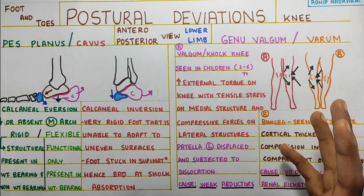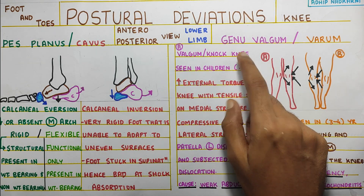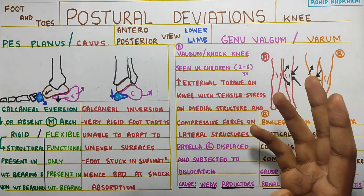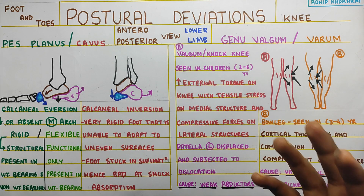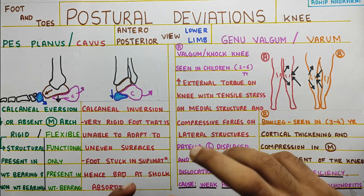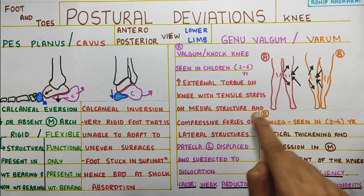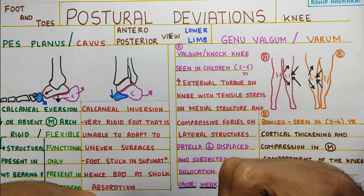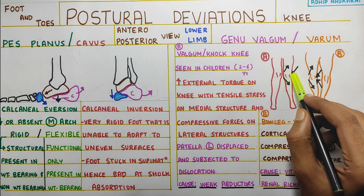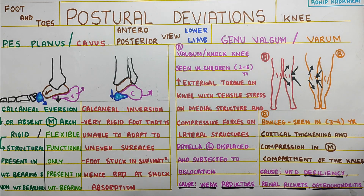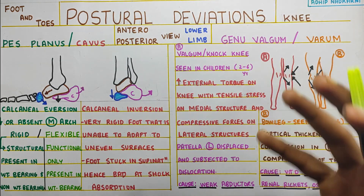At the knee, there is genu valgum and genu varum. Valgum is also called knock knees, commonly seen in children around age two to six, which is normal. But if it persists as you grow, it can increase external torque — a twisting force on your knee — with tensile stresses on the medial structure and compressive forces on the lateral structure. The compressive forces will be present in the lateral compartment, and tensile or distractive forces in the medial compartment.